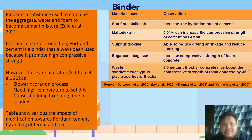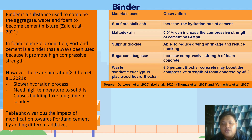Now we look at the binder. A binder is a substance used to combine the aggregate, water, and foam to create a cement mixture. In foam concrete production, Portland cement is the binder most commonly used because it promotes high compressive resistance. However, it has limitations such as a slower hydration process and requires high temperature to solidify. Research has been conducted to investigate modifications to Portland cement by adding different additives. Results show that fly ash will increase the hydration rate of cement, while maltodextrin, sugarcane bagasse, and biochar will increase compressive strength, and sulfur trioxide will decrease the drying shrinkage problem.